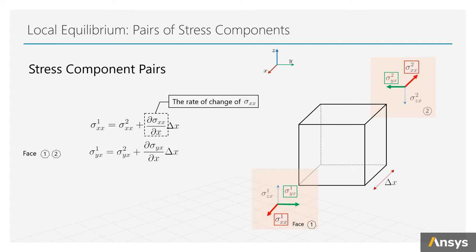Same thing for sigma yx and sigma zx on surface 1 and 2. We use rate of change of sigma yx and sigma zx to relate them. And such relationship can be extended to surface pairs 3 and 4 and surface 5 and 6.